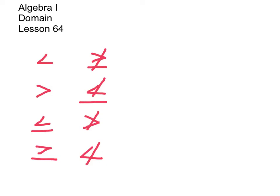Let's take a look at the top left one, which is less than. Less than means the same thing as this negated inequality of not greater than or equal to. For example, x less than 2 represents numbers that are less than 2. I might have 1, I might have 0, I could have fractions — for example, 0.5 is less than 2. This means exactly the same thing as numbers not greater than or equal to 2. So if I asked you for a number that's not greater than or equal to 2, you might say 1, you might say 0, you might say 0.5. These mean exactly the same thing.